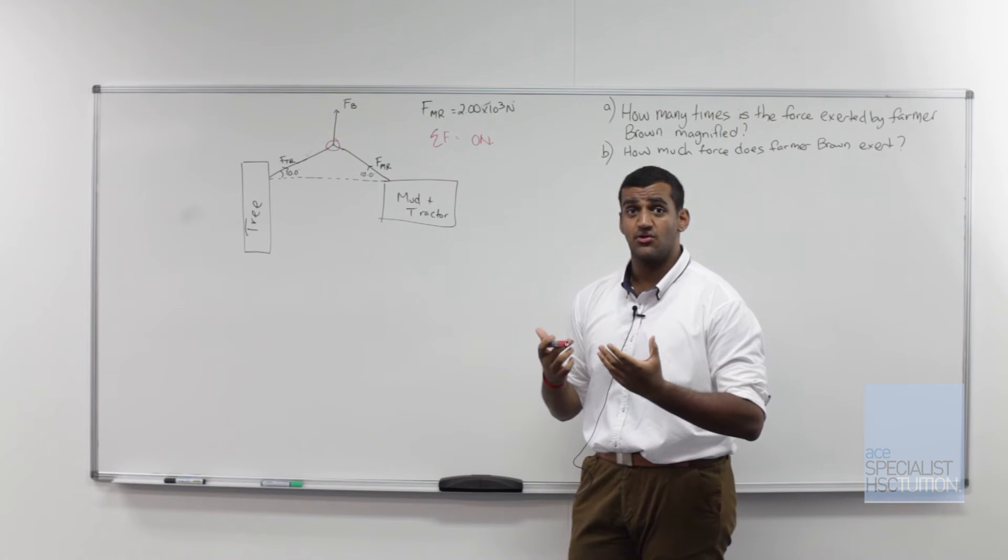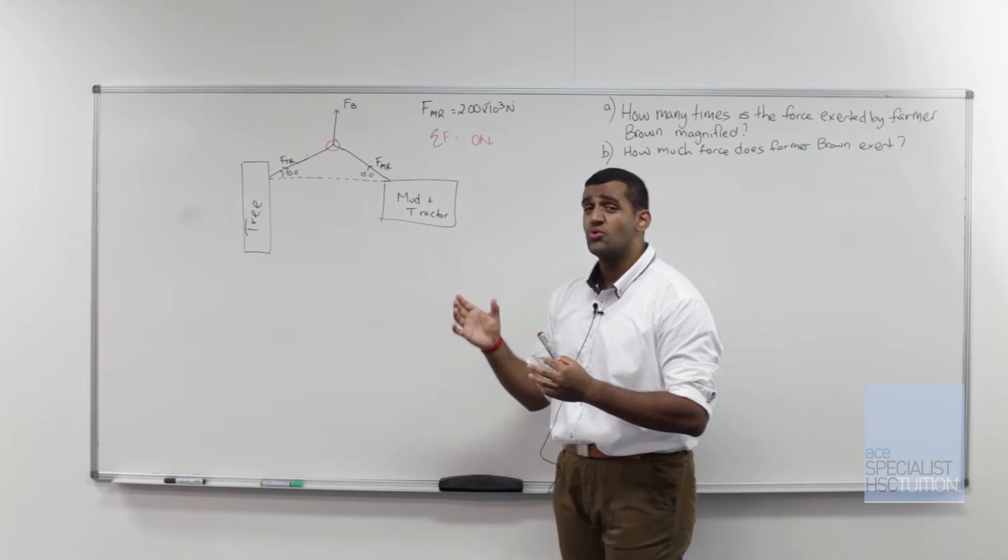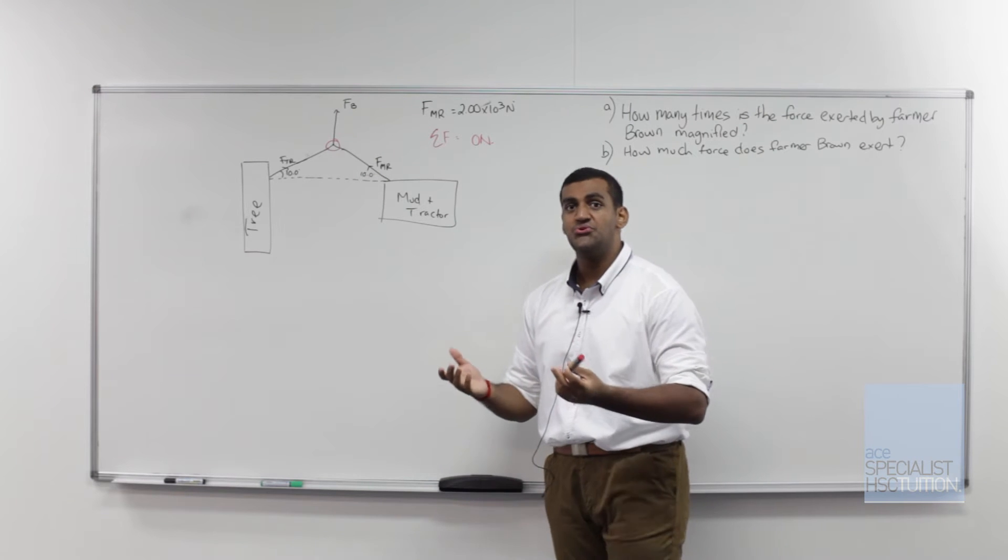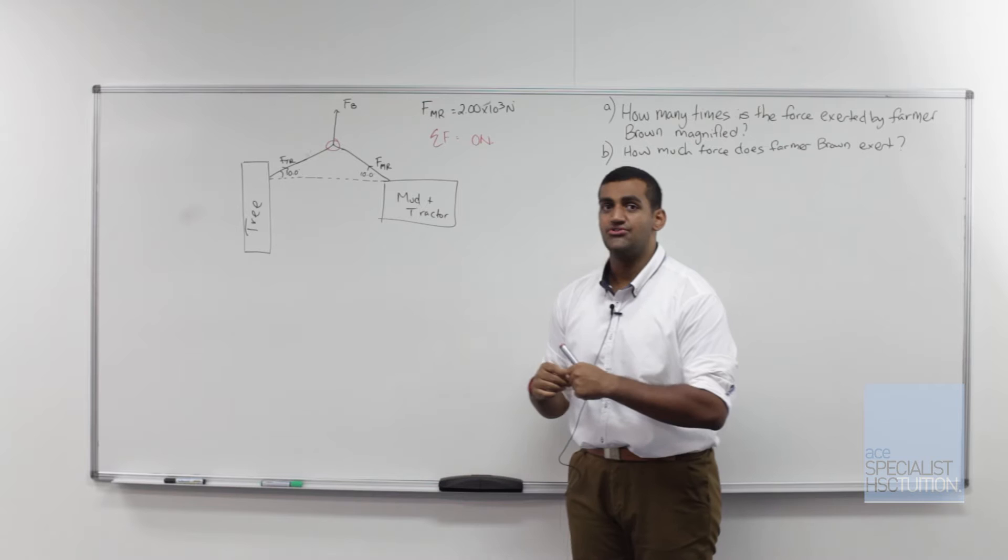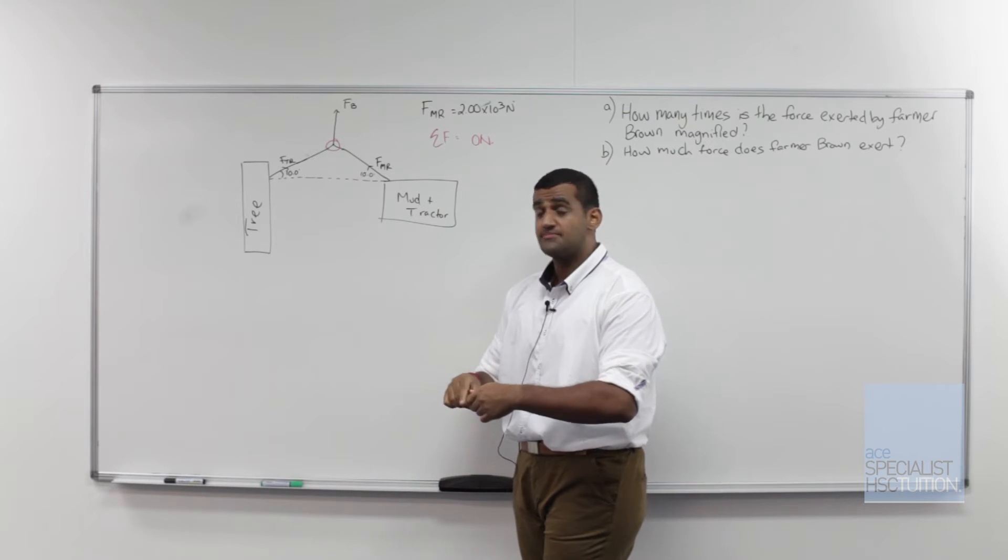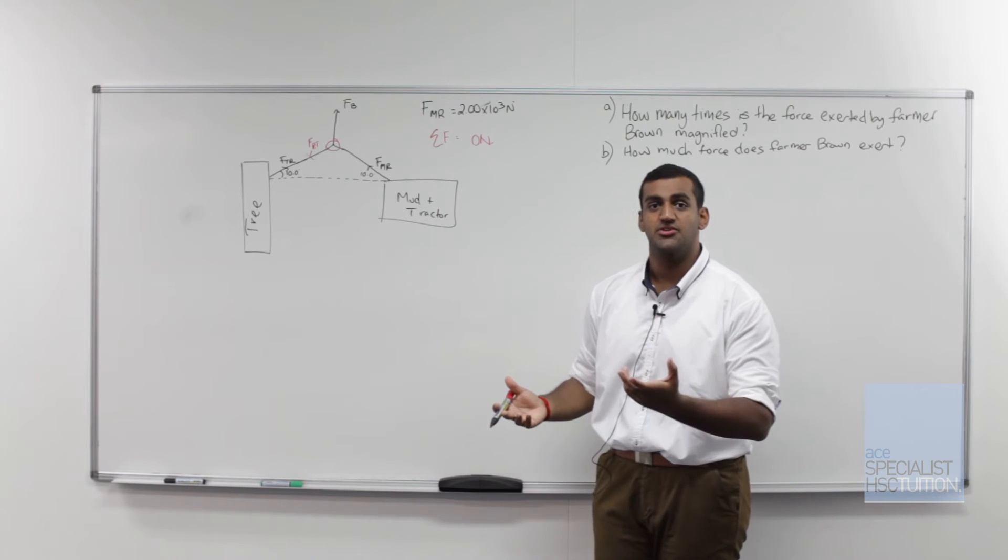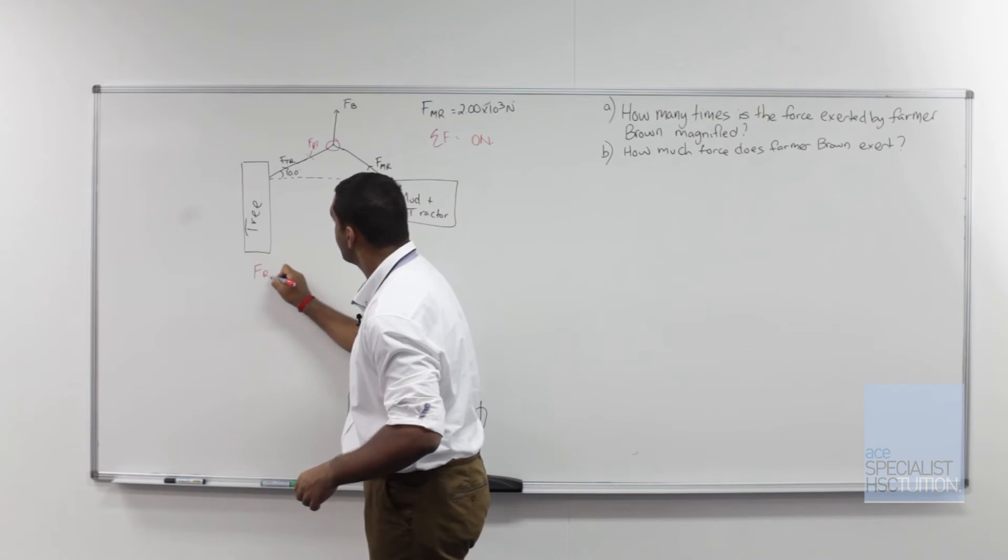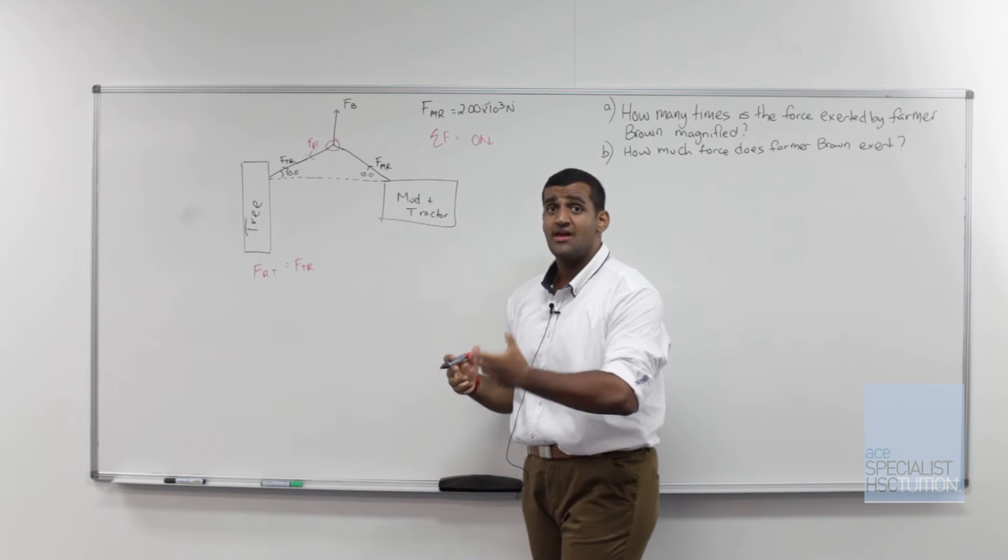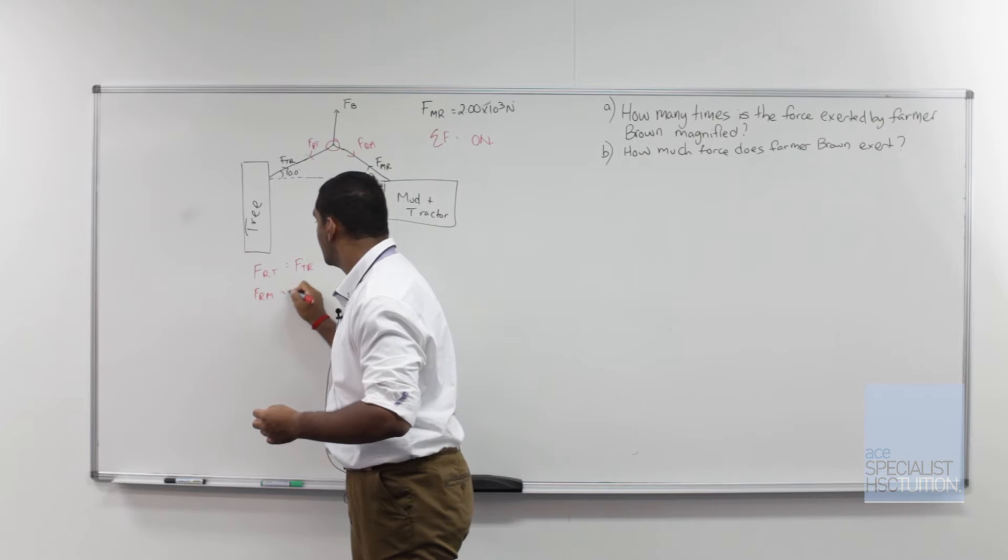Now the next thing that we're going to do is use Newton's third law because when we draw free body diagrams, free body diagrams are just for a single system or a single body. So in this case we want to look at all the forces acting on this rope. To draw a free body diagram first, we're going to consider the forces acting on the rope. To do that we need Newton's third law. Newton's third law states that every action has an equal and opposite reaction. So if FTR is the force exerted on the tree by the rope, we can label another force FRT which is the force exerted on the rope by the tree, and these forces should be equal and opposite. FRT is equal to FTR. Similarly, if FMR is the force the rope exerts on the tractor, the force the tractor exerts on the rope is equal to FRM, and again these are equal and opposite.